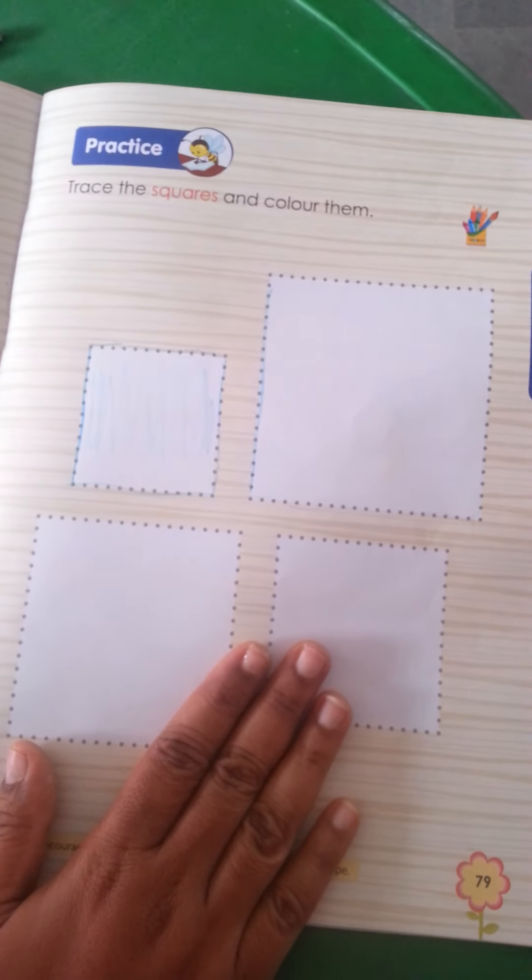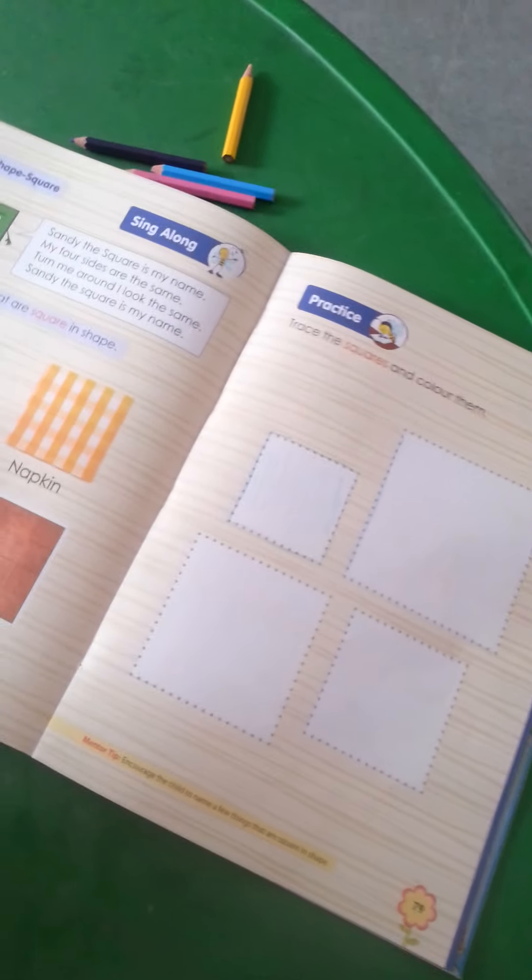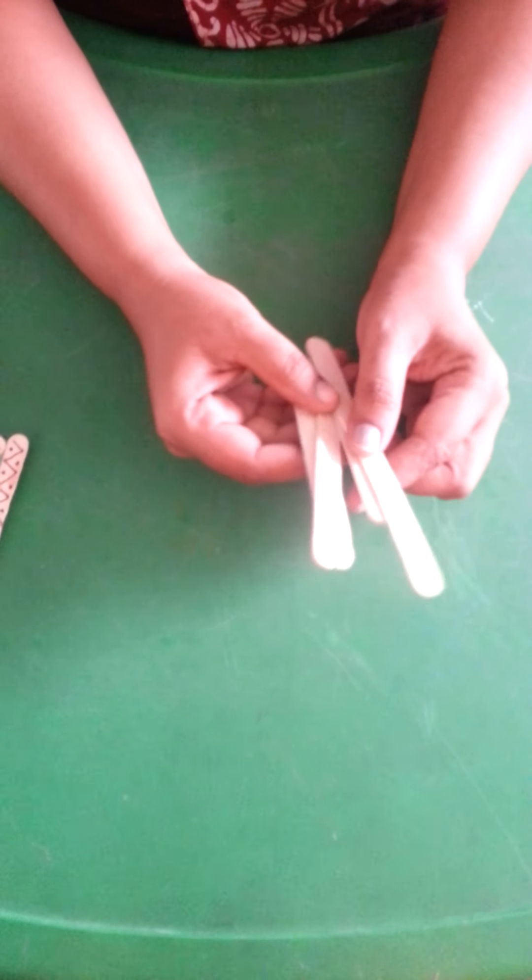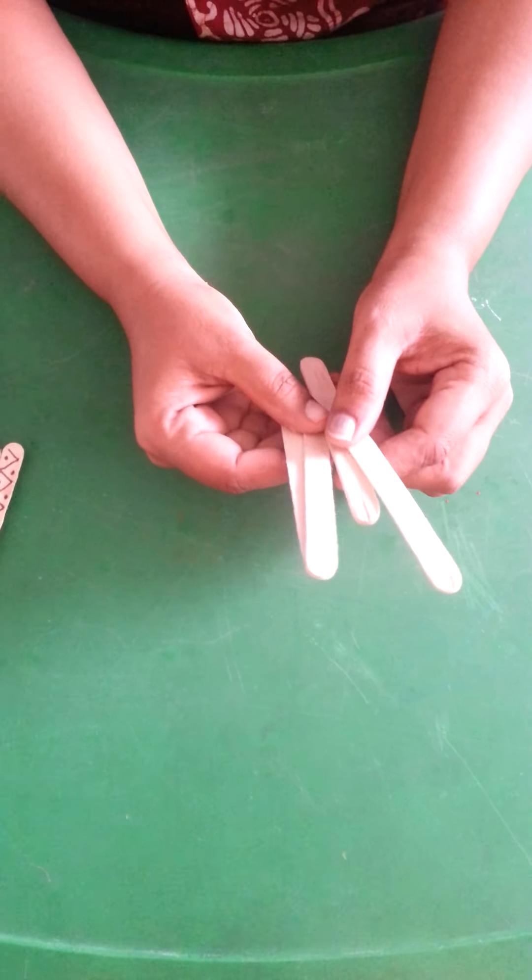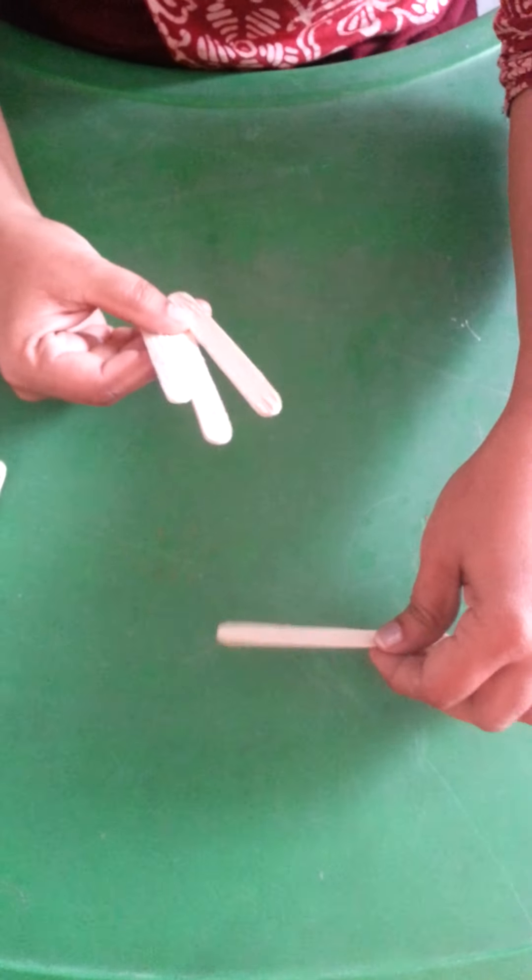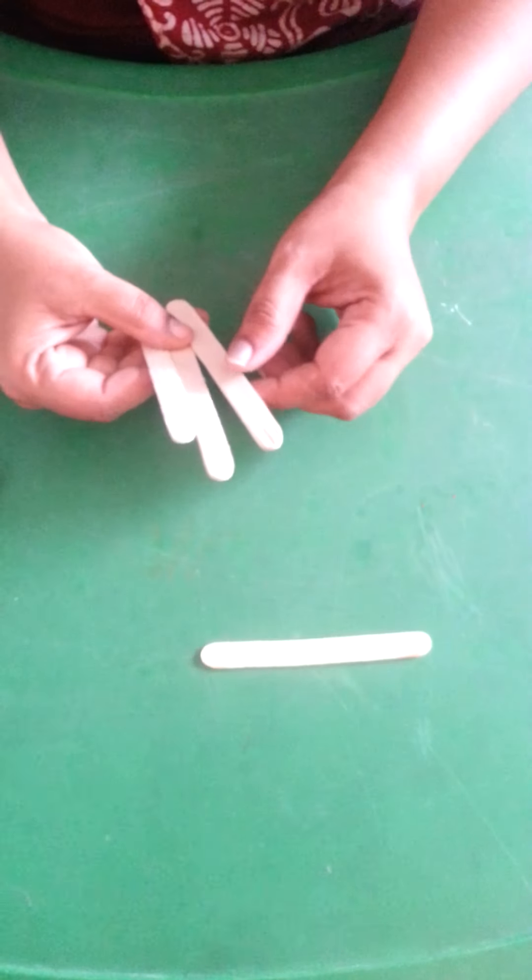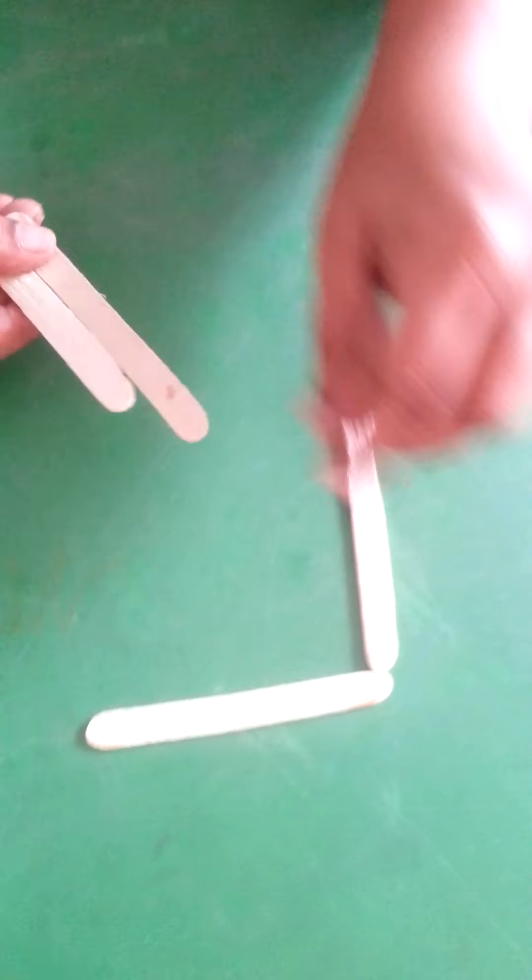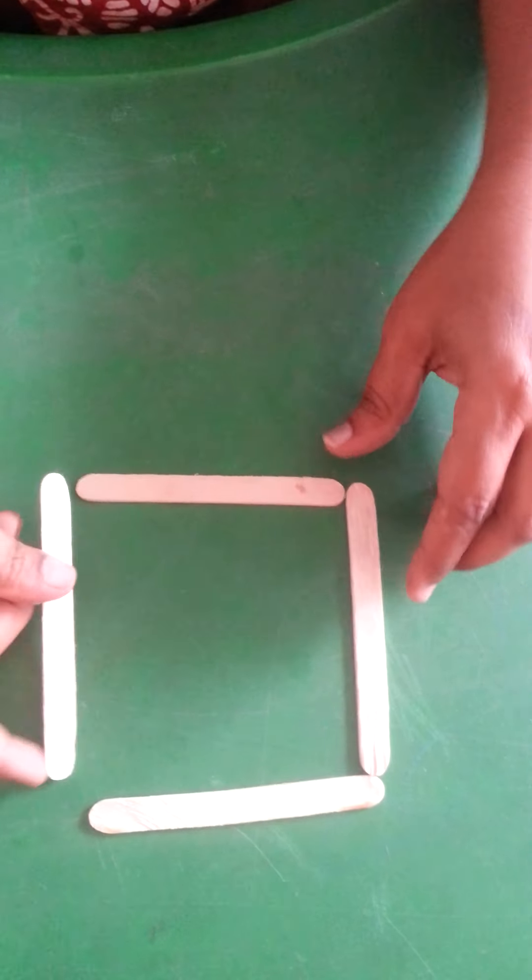This is your homework now children. A small activity for you. This activity you have to take four ice cream sticks and make a square shape. This is how it is.